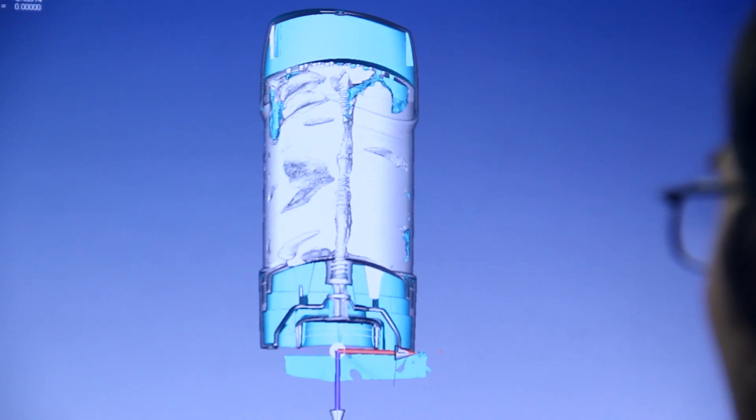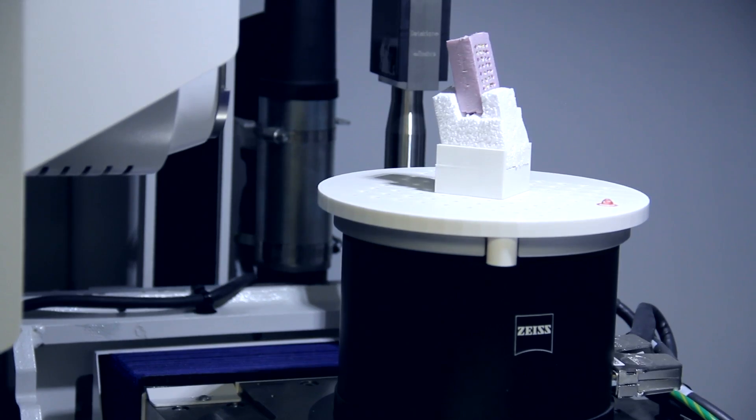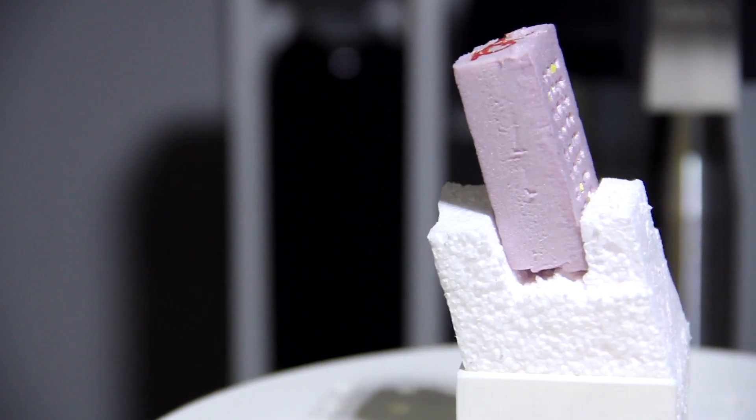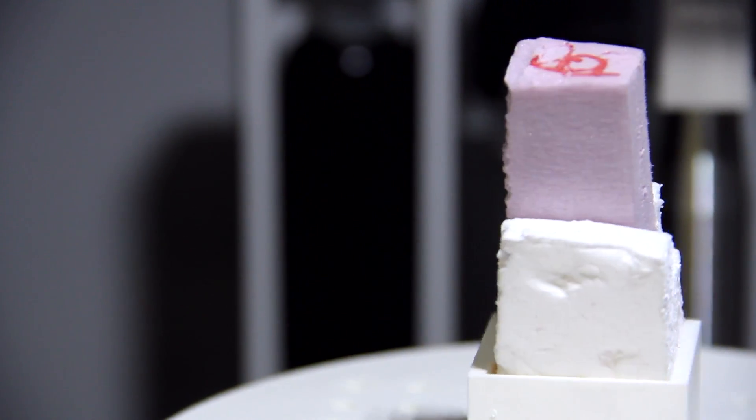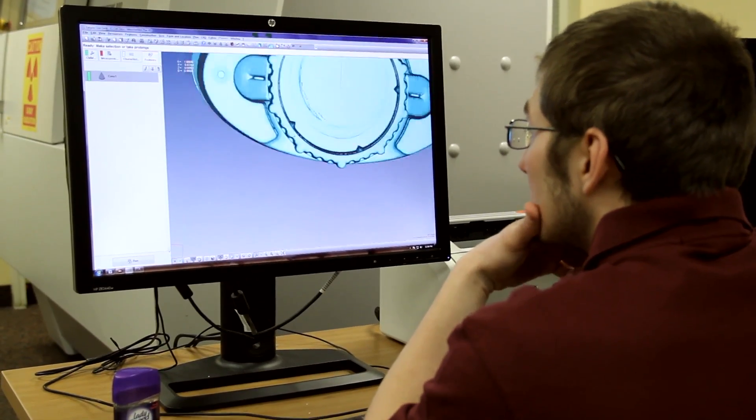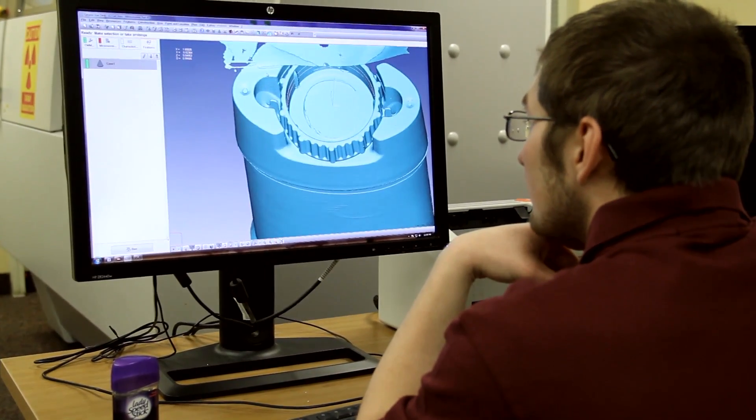The metrotom has allowed us to take complex first articles on multi-cavity micro-molded tooling. Things that used to take us traditionally a month and a half to do now take us a couple weeks in a first article format. It's also allowed us to take our complex assemblies and see interferences or see leak paths where they might exist.